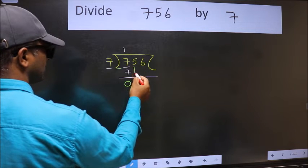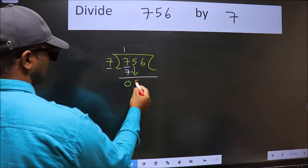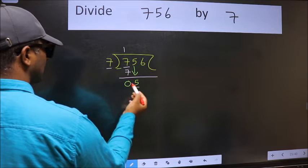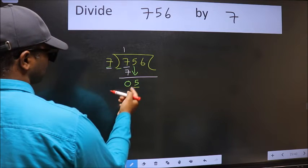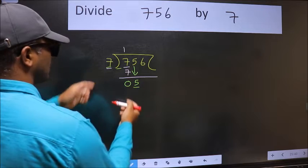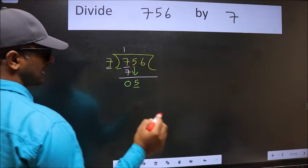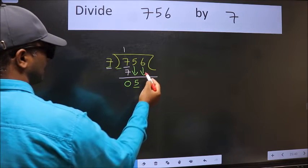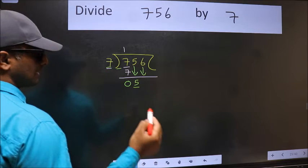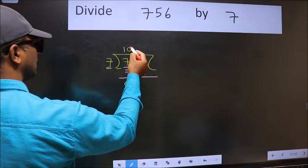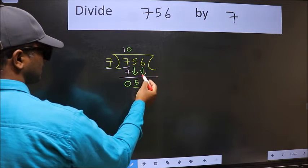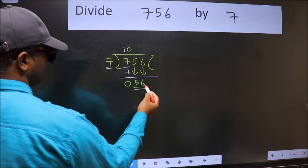After this, bring down the beside number. So 5 down. Now here we have 5 and here 7. 5 is smaller than 7, so we should bring down the second number. And the rule to bring down the second number is we should put 0 here. Then only we can bring this number down.